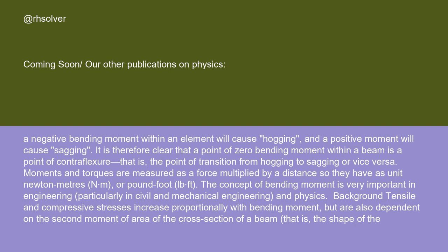then a negative bending moment within an element will cause hogging, and a positive moment will cause sagging. It is therefore clear that a point of zero bending moment within a beam is a point of contraflexure, that is, the point of transition from hogging to sagging, or vice versa. Moments and torques are measured as a force multiplied by a distance, so they have as unit newton-metres (N·m), or pound-foot (lb·ft). The concept of bending moment is very important in engineering, particularly in civil and mechanical engineering, and physics.